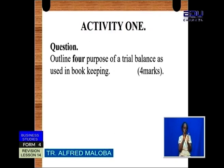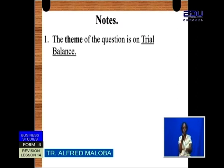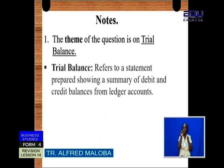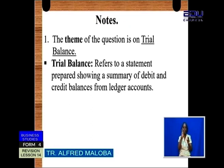The award of marks is four, so we need to look at the key areas before we answer the question. The first aspect is that the theme of the question is on the trial balance. A trial balance refers to a statement prepared showing a summary of debit and credit balances from ledger accounts. That is key so that you know what statement you are preparing.